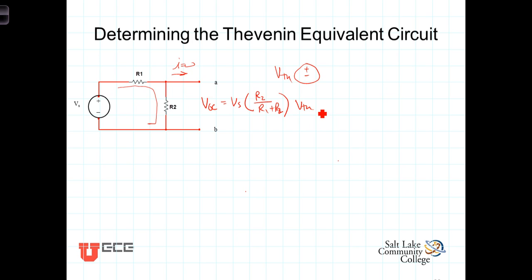To get the open circuit voltage, use any of the circuit analysis techniques you have to determine the voltage across the open terminals. Next, we need to determine the Thevenin resistance. There are at least three different methods for determining the Thevenin resistance, and we're going to demonstrate each of those methods on this simple circuit.